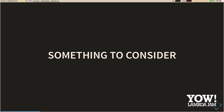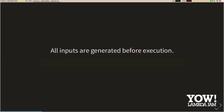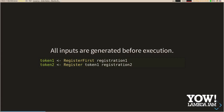Before we go much further, there's something I want to consider: all of our inputs in this model are generated before we've executed anything against the application. So in this pretend pseudocode, if we run our register-first input, we have this potential output — we're expecting to get back a token. And we're still generating our inputs. We generate another input we're planning to run, which is a register command, and one of its arguments is this authentication token. So we need some way to talk about our state and the values we're getting back before we've actually executed anything.